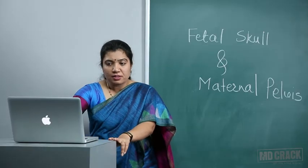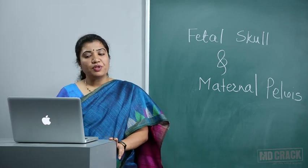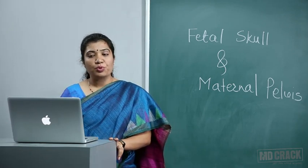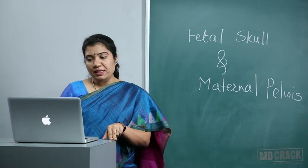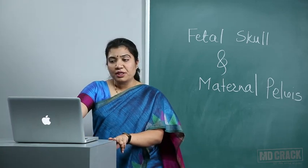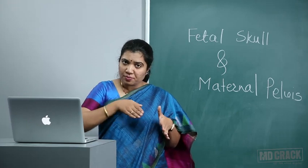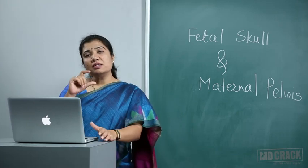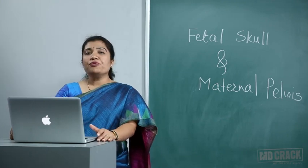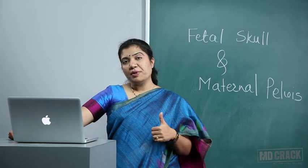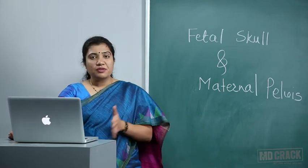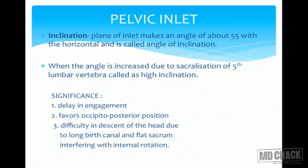The plane of the pelvic inlet is an imaginary flat surface; its axis is the perpendicular line to this plane. The angle of inclination — the angle this plane makes with the horizontal — is about 55 degrees. When this angle increases due to sacralization of the fifth lumbar vertebra (high inclination), it causes delayed engagement, favors OP position, and causes difficulty in descent of the head due to long birth canal and flat sacrum. It also interferes with internal rotation.